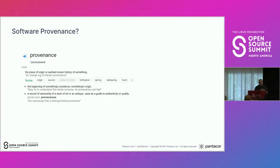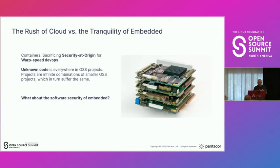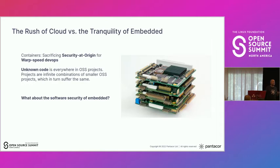For embedded in particular, this is interesting. We think about what has happened at the cloud — containers have been great. We've sacrificed, however, that sort of security at the point of development or point of origin for super fast DevOps. Okay, that works for the cloud. The cloud is much more easy to manage if there are issues — it's much more ephemeral, just fast. You can deal with these issues at a much higher velocity.